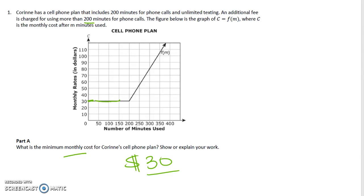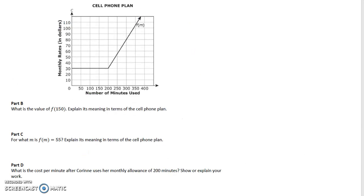If you said $30, that is correct. That minimum amount is $30. She pays $30 all the way until she hits 200 minutes, after that it starts going up. Looking at this same information, it says what is the value of f(150) and explain its meaning.